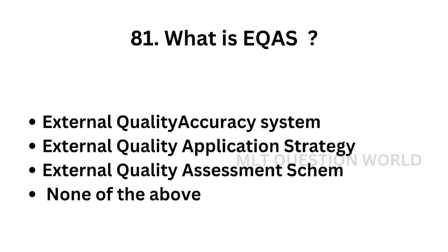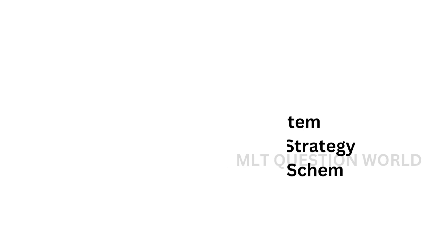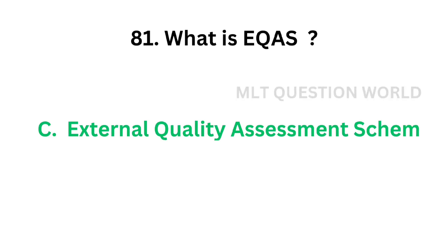Question number 81. What is EQAS? Option A: External Quality Accuracy System. Option B: External Quality Application Strategy. Option C: External Quality Assessment Scheme. Option D: None of the above. The correct answer is Option C — External Quality Assessment Scheme. EQAS stands for External Quality Assessment Scheme.